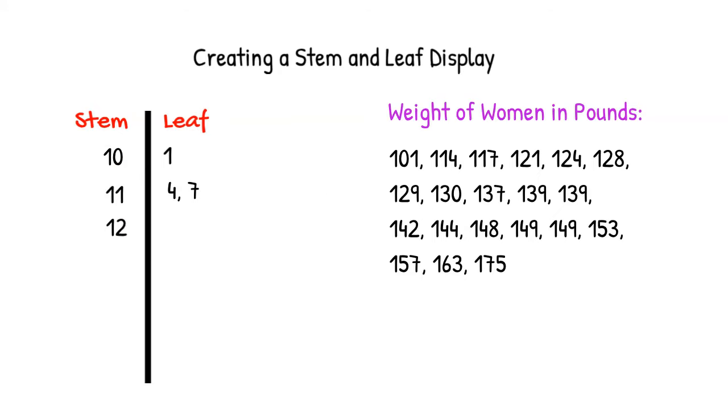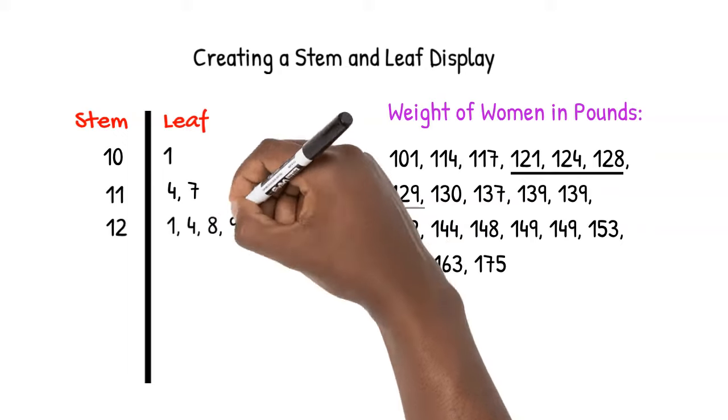Our next stem is 12. The numbers in the leaf are 1, 4, 8, and 9.